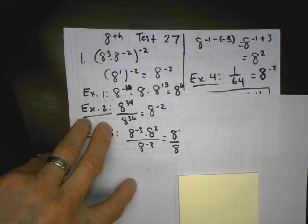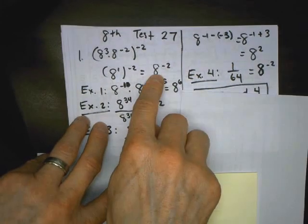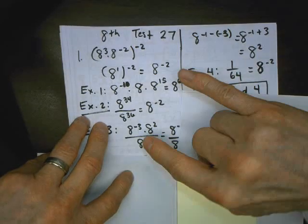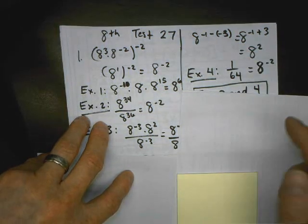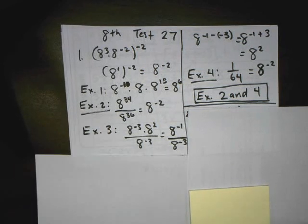And for expression 4, 1 over 64, well, if I were to simplify 8 to the negative second, negative exponent we learned in class means to flip, that's 1 over 8 squared, so it's the same as 1 over 64. My answer is 2 and 4.